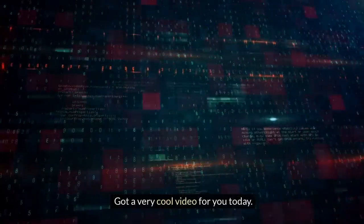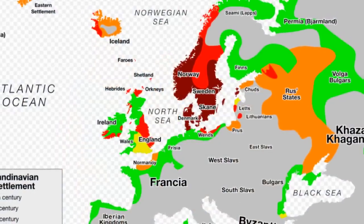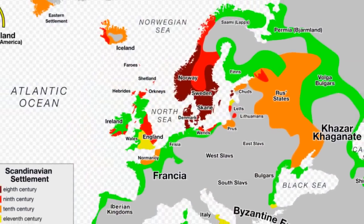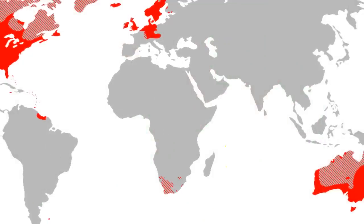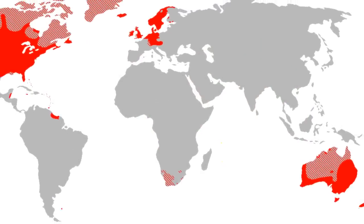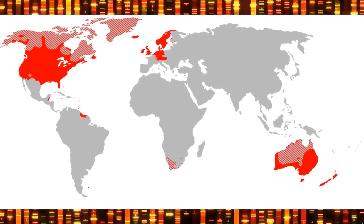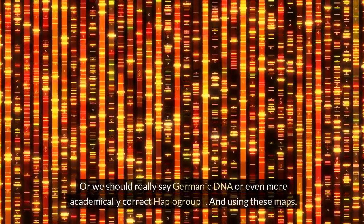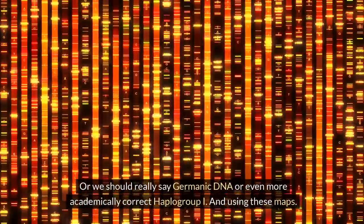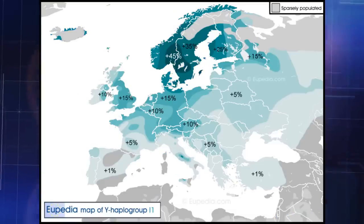Welcome everyone! I have a very cool video for you today covering Viking DNA in each European country — and if your ancestors are from Europe and settled somewhere else in the world, you'll find your ancestry here too. We can really call this Germanic DNA, or more academically correct, haplogroup I. We'll be using these maps here, so check out this website if you're interested in more great data.